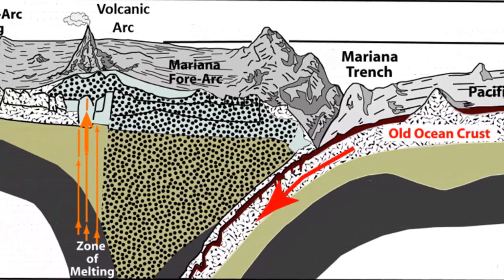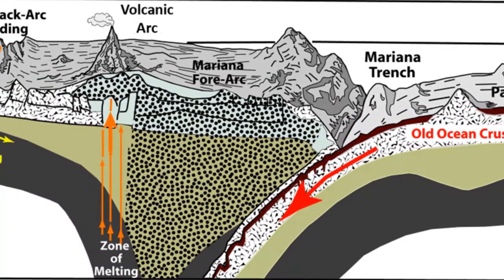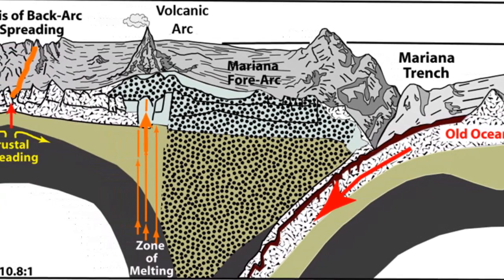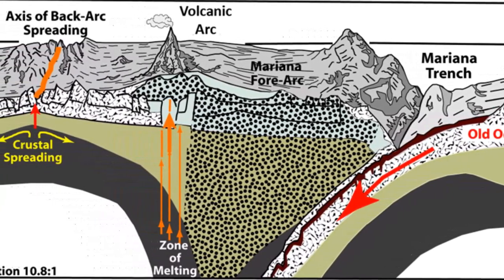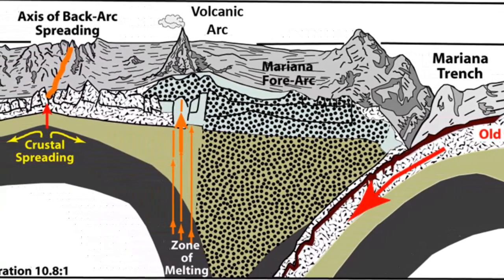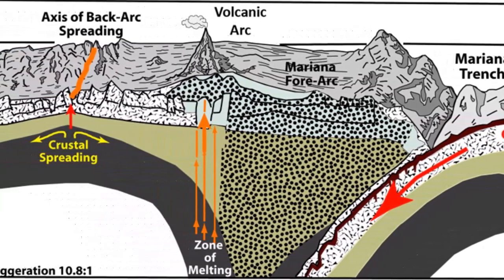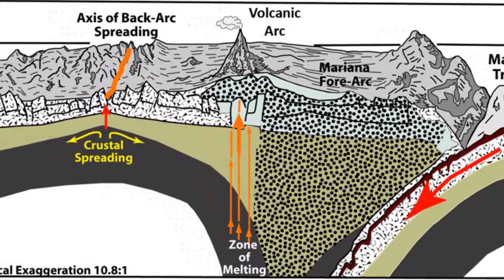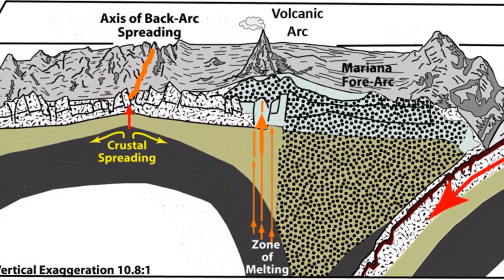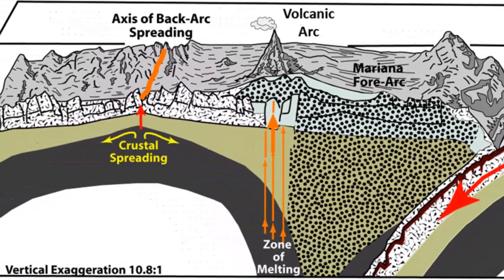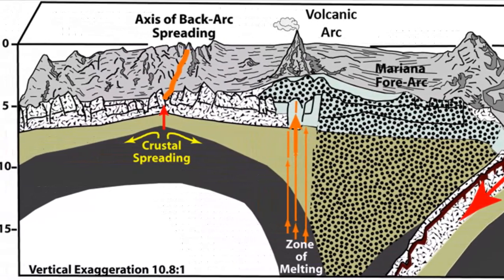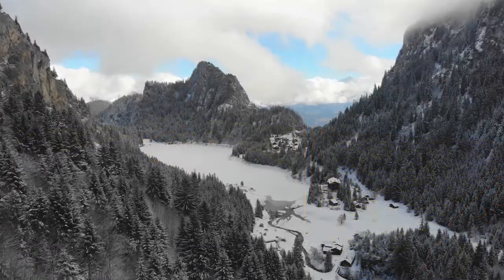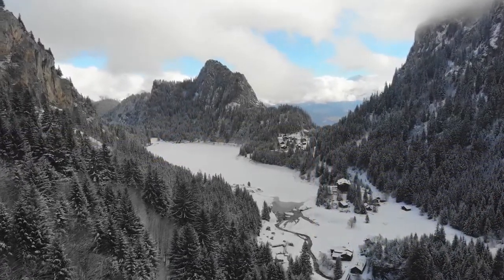Recall that thinning and rifting of the lithosphere results in upwelling of hot mantle rock and accompanying decompression melting. Continued extension initiates a type of seafloor spreading that generates new ocean crust, thereby increasing the size of a developing back arc basin.